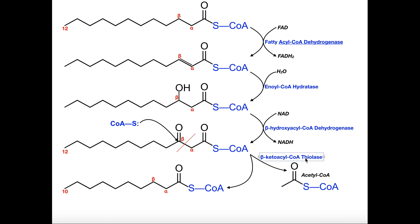The fourth enzyme, sometimes just called thiolase, has the full name beta-ketoacyl-CoA thiolase. It's going to split the bond between the alpha and beta positions. We still have 12 carbons at this point — all we've done so far is oxidize the beta position. A coenzyme A is going to attack this position and, through an acyl substitution mechanism, cleave the bond between the alpha and the beta carbon.